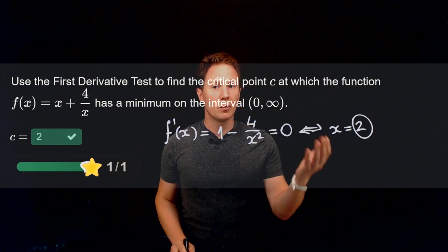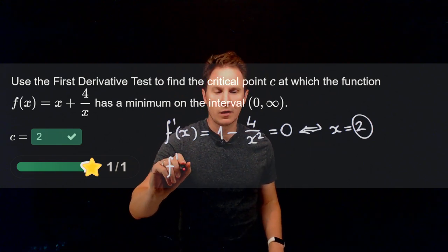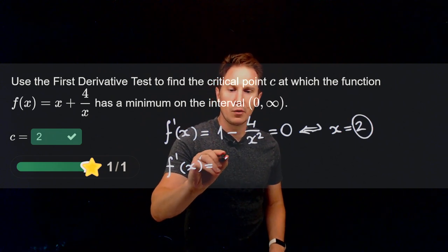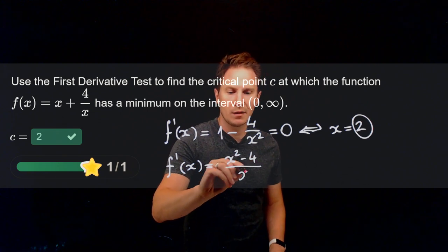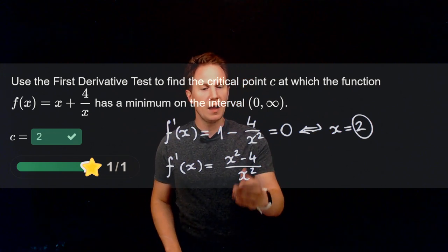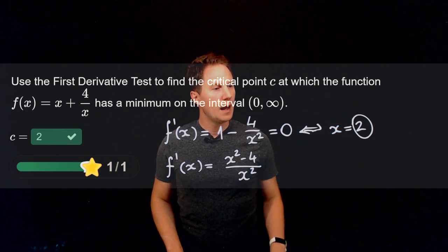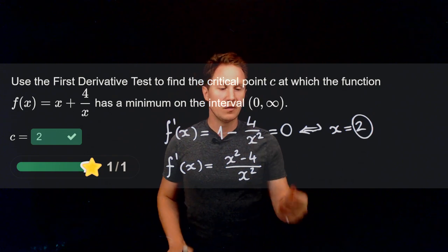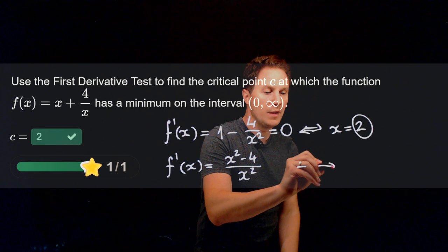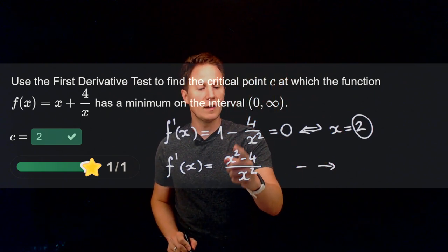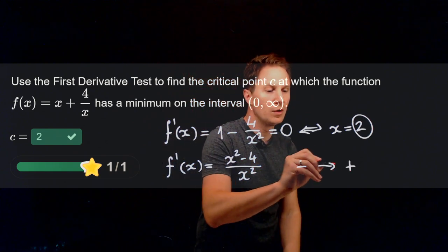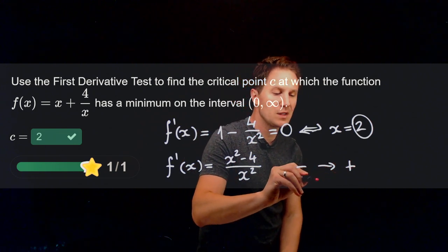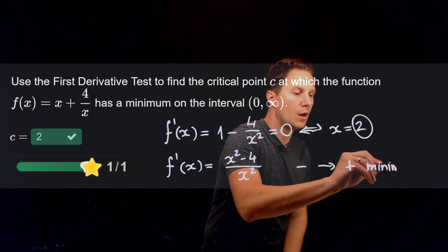To see whether x = 2 is a minimum or a maximum, we use the first derivative test and look at the first derivative, which is 1 - 4/x², or (x² - 4)/x². If x is slightly less than 2, then x² - 4 is negative. If x is slightly greater than 2, then x² - 4 is positive, and x² is of course positive. So the first derivative goes from negative values to positive values at x = 2. Therefore, by the first derivative test, the function has a minimum at x = 2.